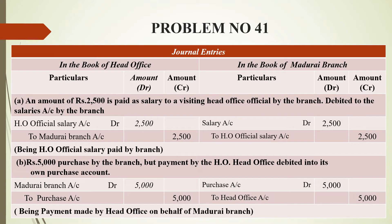The next entry: rupees 5,000 worth of goods purchased by the branch but payment made by the head office. The head office debited it into its own purchase account. On the branch side, the adjustment entry is: Purchase Account debit to Head Office Account, for rupees 5,000. The narration is: being payment made by head office on behalf of Madurai branch.